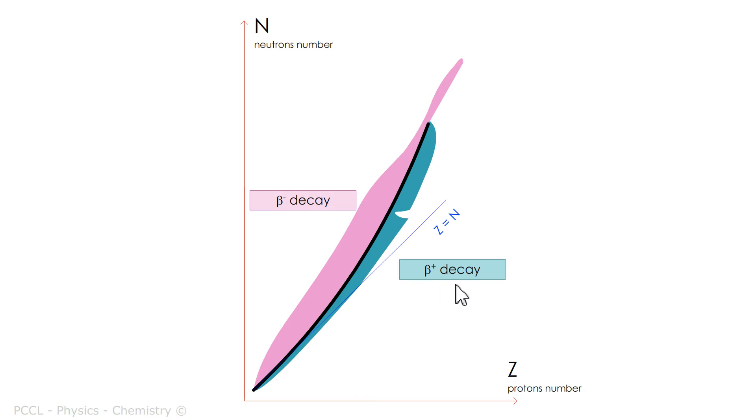The nuclides on the other side of the valley will also seek to join the valley of stability, but undergoing beta plus decay, as they have too many protons. Their proton can change into a neutron through beta plus decay.